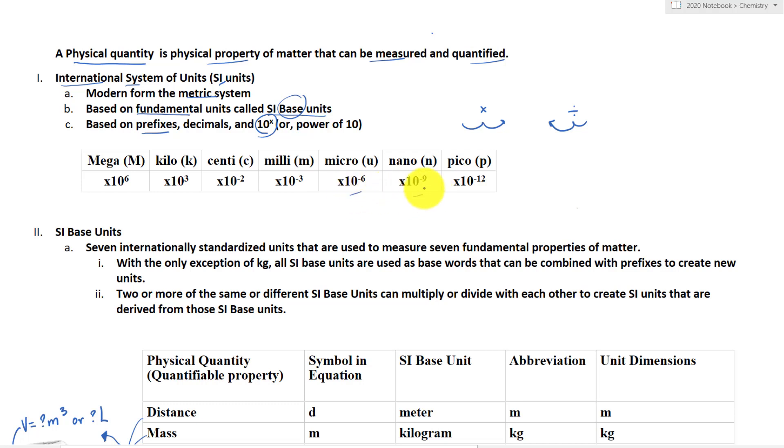For example, we have heard of kilo before — that is 10 to the power of 3 — whereas milli is 10 to the power of negative 3.